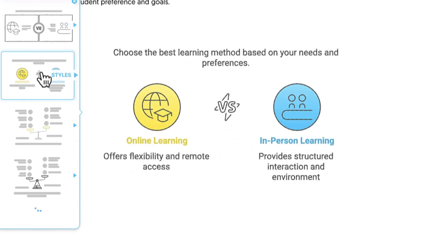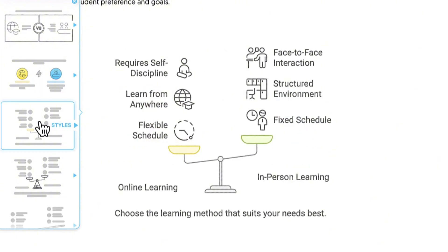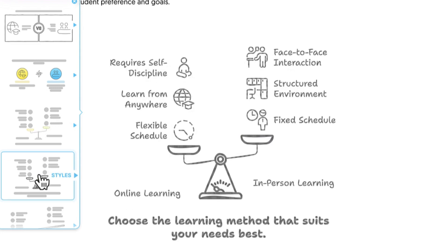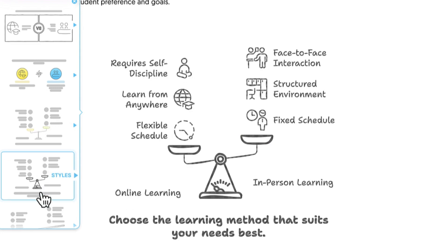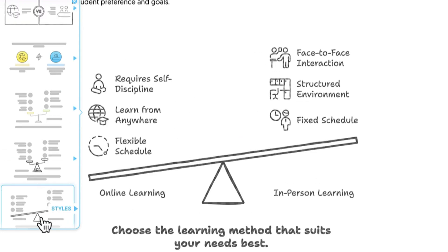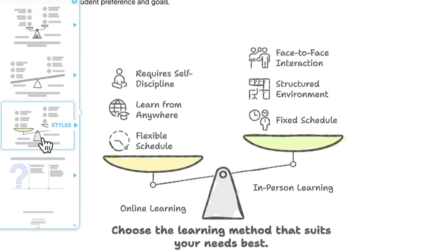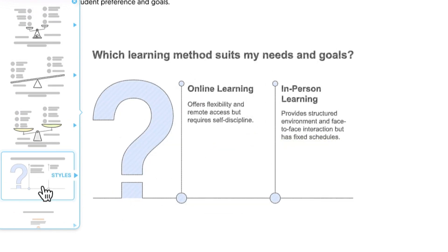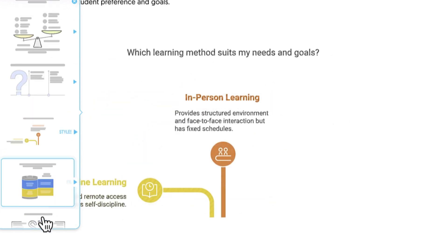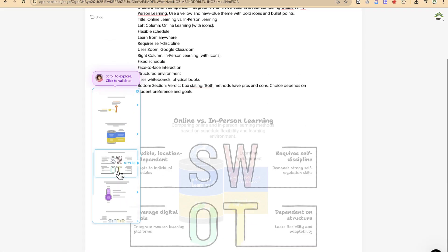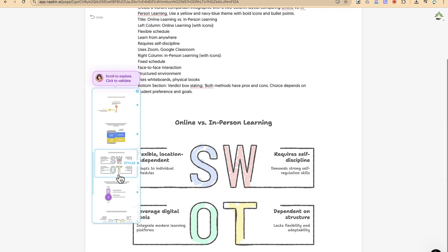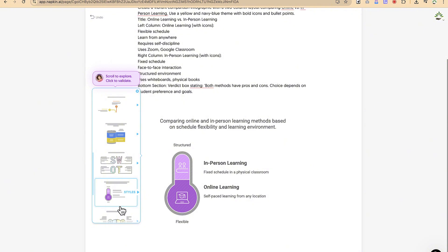This variation is more colorful, showing online learning and in-person learning with their differences clearly displayed. You can browse through many generated variations — this one, or this one, or this one — depending on what you're trying to create. Most of these things are editable, which is the best part. You can easily edit them and select accordingly.